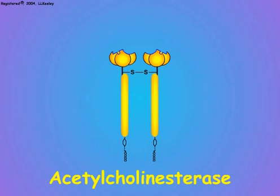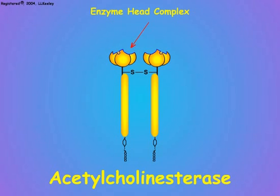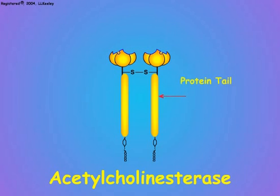Acetylcholinesterase consists of two parts: globular head proteins that perform the enzyme activity, and tail proteins that attach the head complex to the cell membrane.